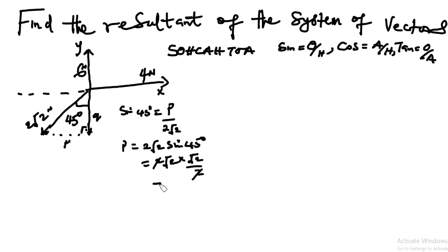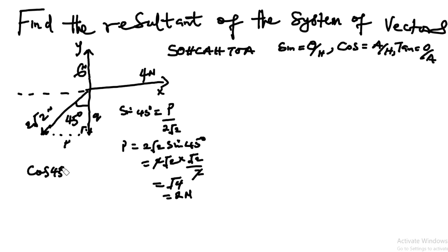Sine 45° is √2/2. So we have P = 2√2 × (√2/2). √2 × √2 = √4 = 2, so this simplifies to 2. We have found the horizontal component of this force: it gives us 2 Newton. Now let us find the vertical component. This side is adjacent and this is the hypotenuse, so cos 45° equals Q / (2√2), giving us Q = 2√2 × cos 45°.